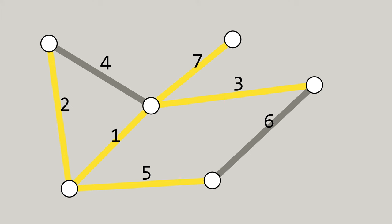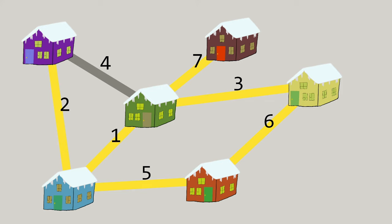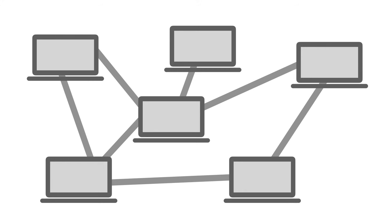And it turns out that this type of problem shows up in a lot of places, whether it's clearing out snow in a small town after a snowstorm, or connecting a network of computers such that every computer can communicate with every other, or wiring up electricity across all the rooms in a house.